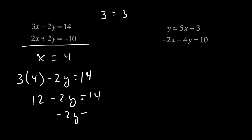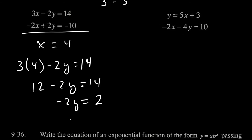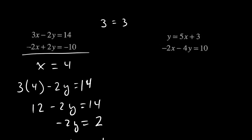So 12 minus two Y is 14. Negative two Y is, just two, 14 minus 12 is two. So Y would have to be negative one. So my solution for this is the point four comma negative one. And if I plug that point into both equations and check, it does make both the left and the right hand sides of both equations the same.